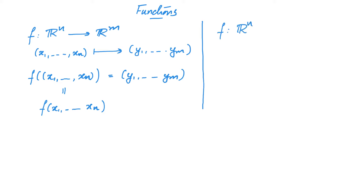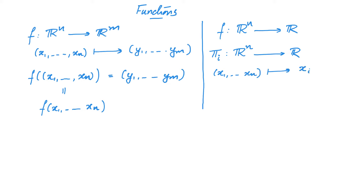For simplicity, we will first look at the case where m equals 1. A simple example of such a function is the projection map. It takes an element in Rⁿ of the form (x₁, x₂, ..., xₙ) and maps it to the i-th coordinate, xi.